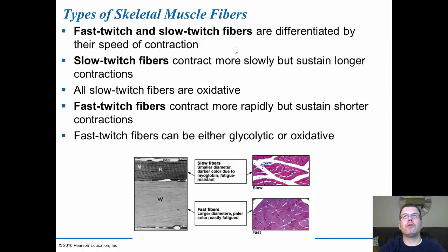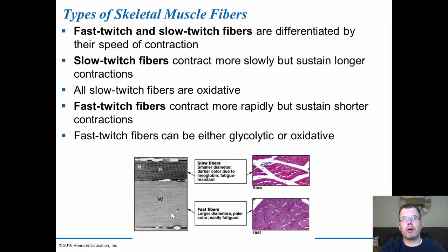Fast and slow twitch fibers differ in speed of contraction. Slow twitch contract more slowly but sustain longer contractions; fast twitch contract more rapidly but sustain shorter contractions. Slow twitch are oxidative; fast twitch can be either glycolytic or oxidative. Slow twitch are smaller, darker due to myoglobin, and fatigue resistant. Fast twitch fibers have fewer mitochondria, are lighter in color, fast but don't sustain long. In human skeletal muscles, we contain both types in varying ratios — this is genetically determined and can be found out through services like 23andMe, which tells you whether you have more slow or fast twitch, indicating whether you'd be better as a marathon runner or a sprinter.